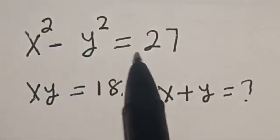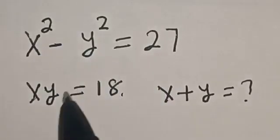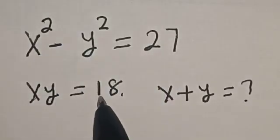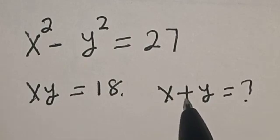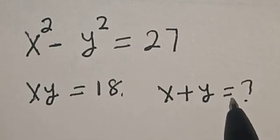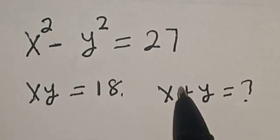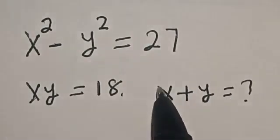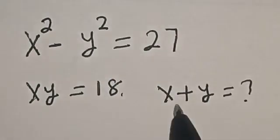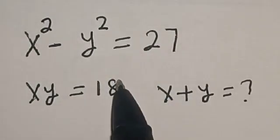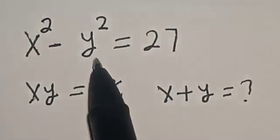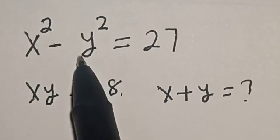x squared minus y squared is equal to 27, and xy is equal to 18. What is the value of x plus y? Welcome to my class. In this class, we want to find the value of x plus y from this given Olympiad equation.